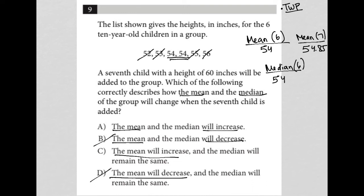But when I add in the seventh number here, the 60, the median is still 54. So it stays 54.